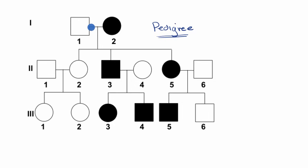If either the circle or the square is colored in, like we see right over here, that means that that person exhibits the trait. And the trait that this particular pedigree is for is the trait of freckles.